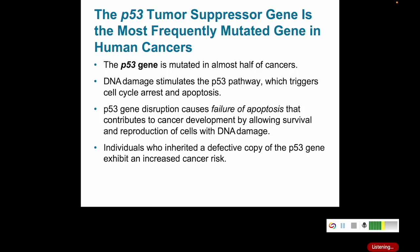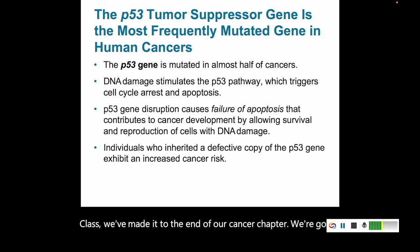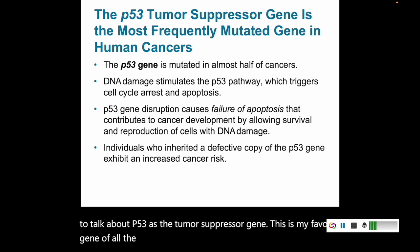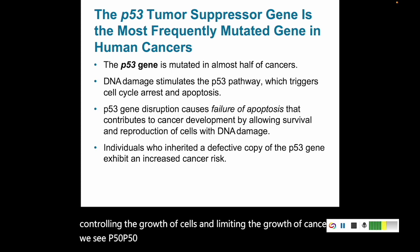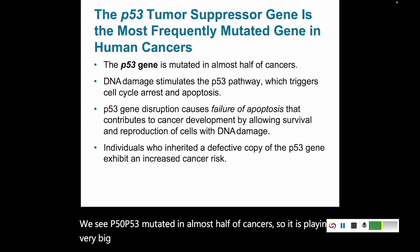Well class, we've made it to the end of our cancer chapter. We're going to talk about P53 as the tumor suppressor gene. This is my favorite gene of all the genes we have. It is super important in controlling the growth of cells and limiting the growth of cancers. We see P53 mutated in almost half of cancers, so it is playing a very big role — it has to be mutated so much for cancers to be developing.